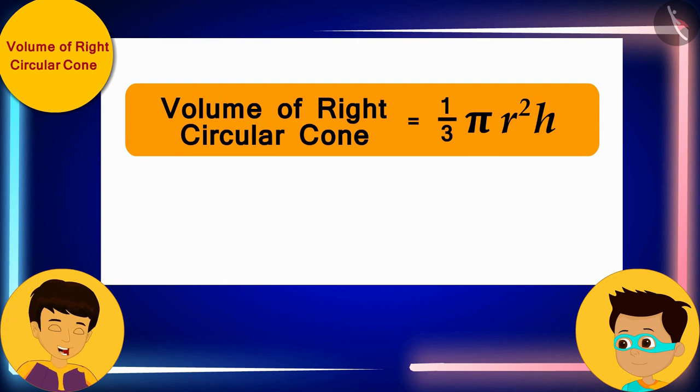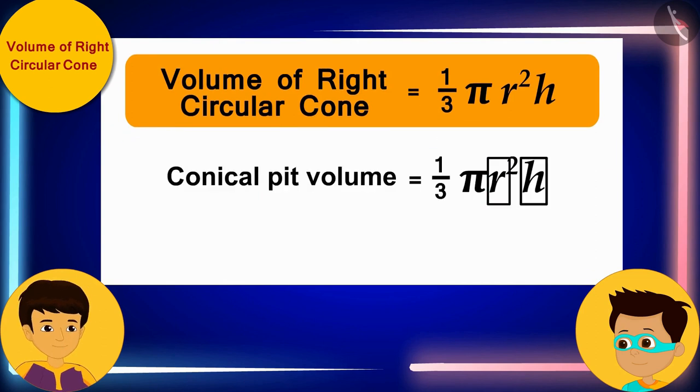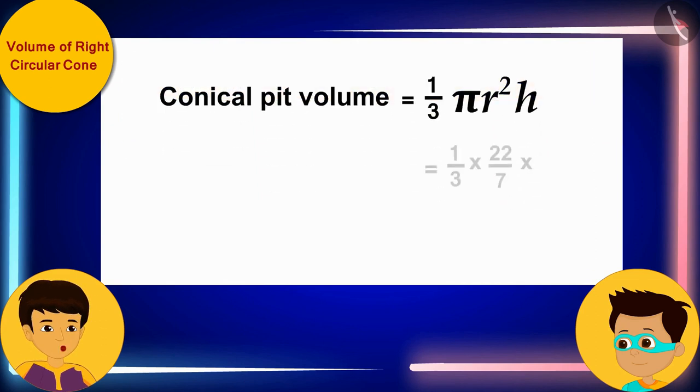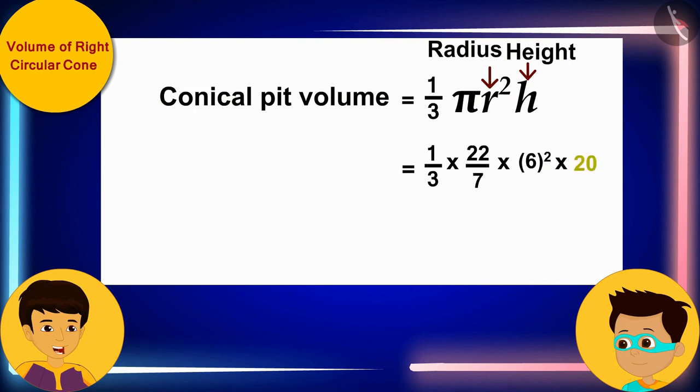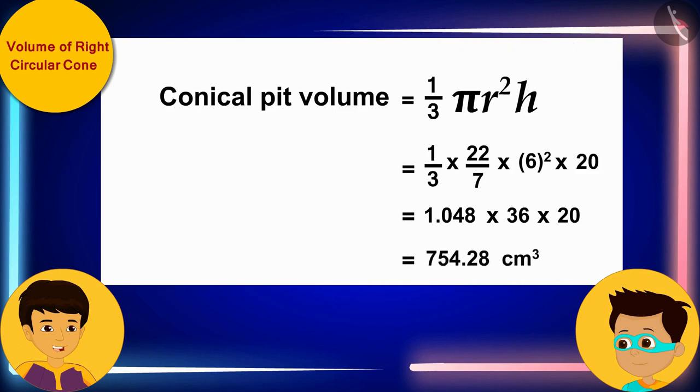Now we need to replace the values in the formula for volume of a right circular cone: radius r = 6 centimeters and height h = 20 centimeters.